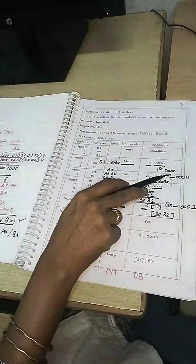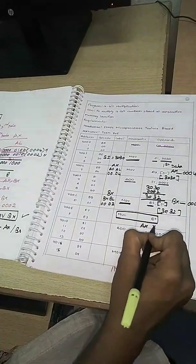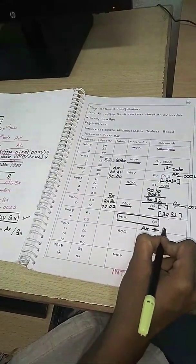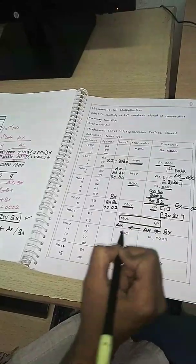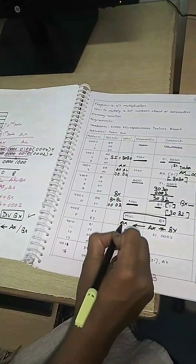Now what I need to do? I need to multiply AX and BX. So what is the syntax for multiplication? MUL BX. If I write MUL BX, automatically the content of AX will be multiplied with the content of BX. Result will be stored in AX. Now who is holding the result? AX is holding the result. What is the result? 0008. 4 into 2 is 0008.